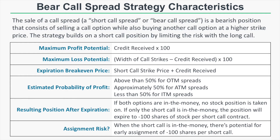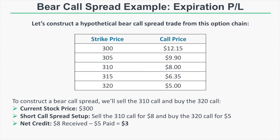Now let's look at a hypothetical bear call spread example and the expiration risk profile graph. Here we have various strike prices and corresponding call option prices. With the stock price at 300, we want to take a bearish stance and sell a bear call spread. We're going to sell the 310 call for $8 and buy the 320 call for $5, giving us a net credit of $3.